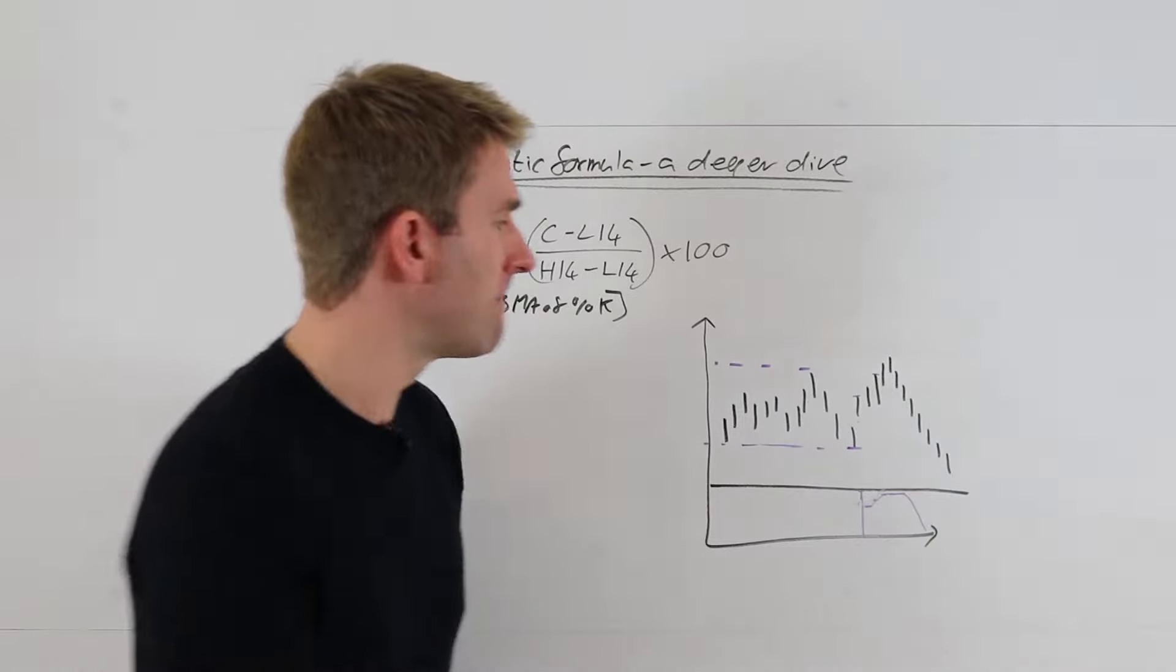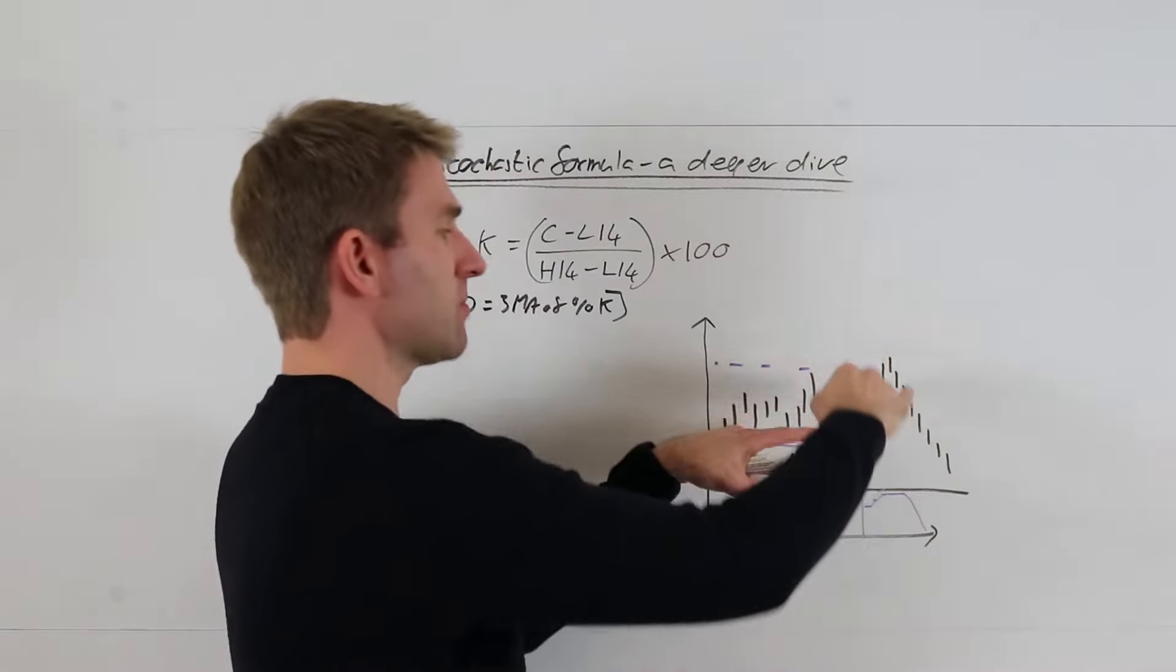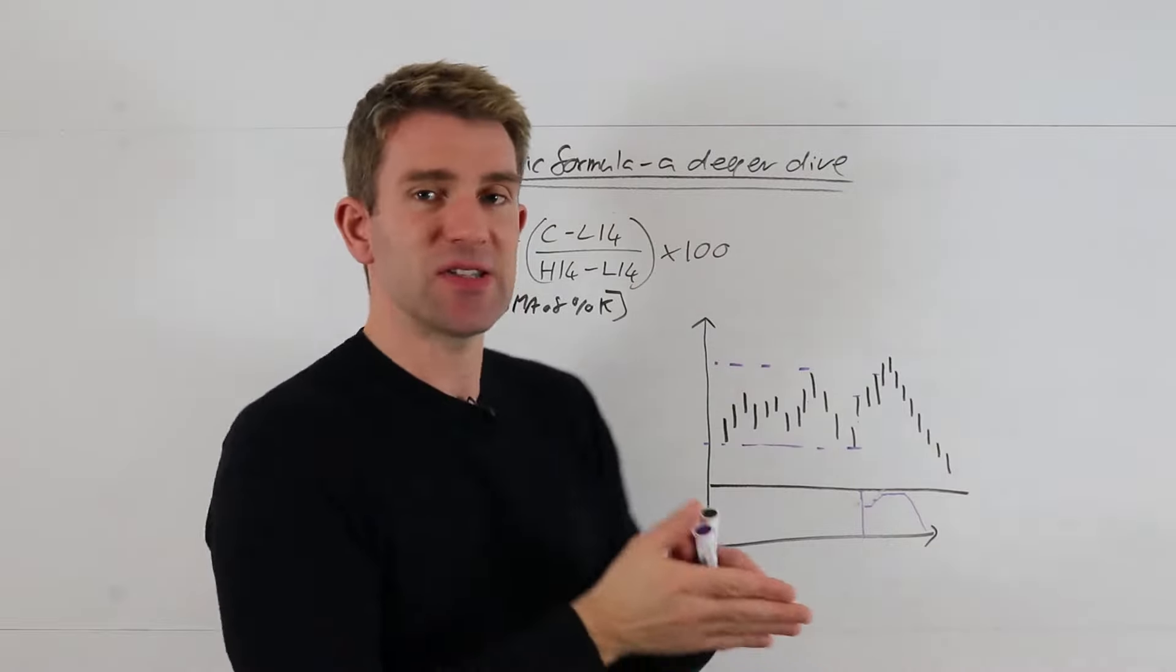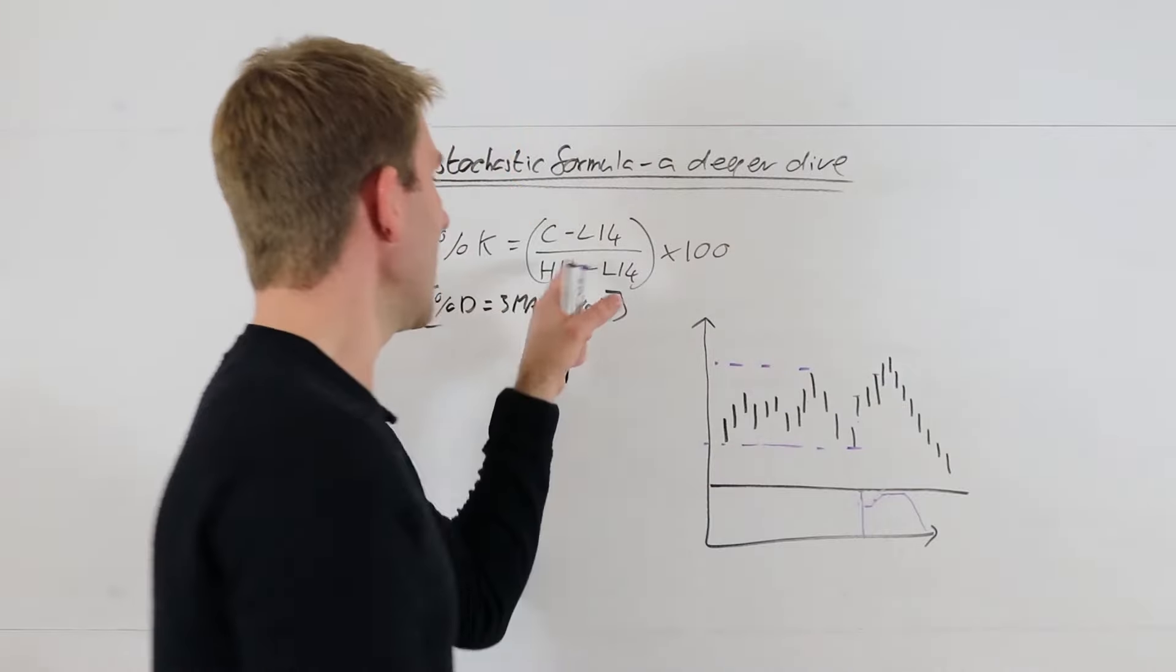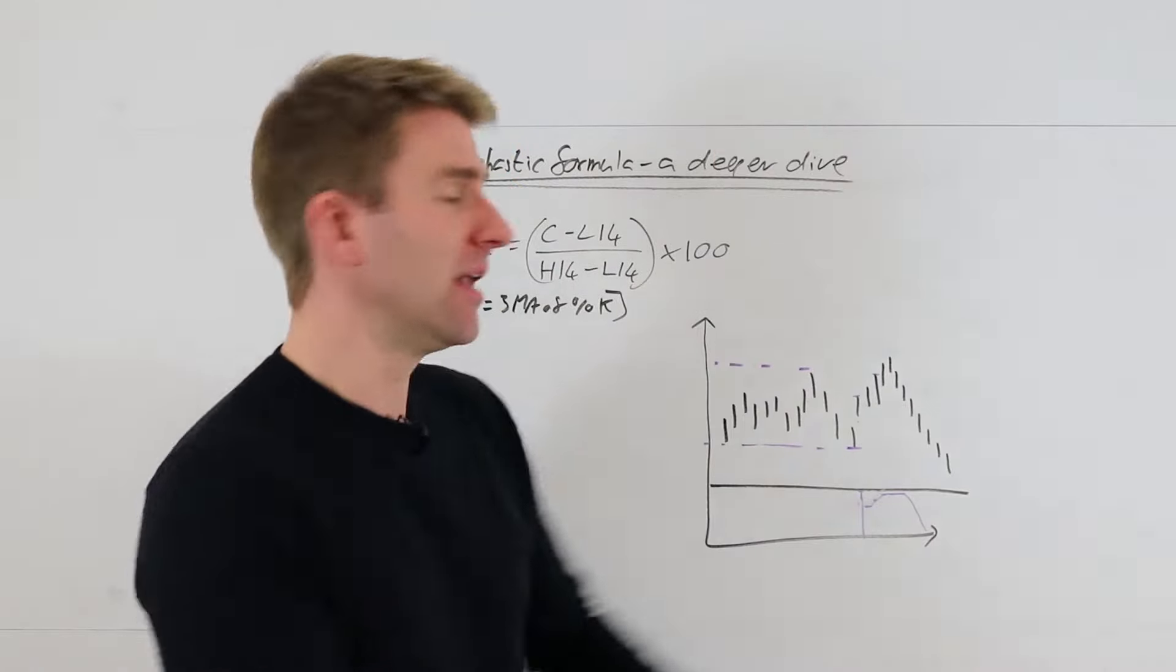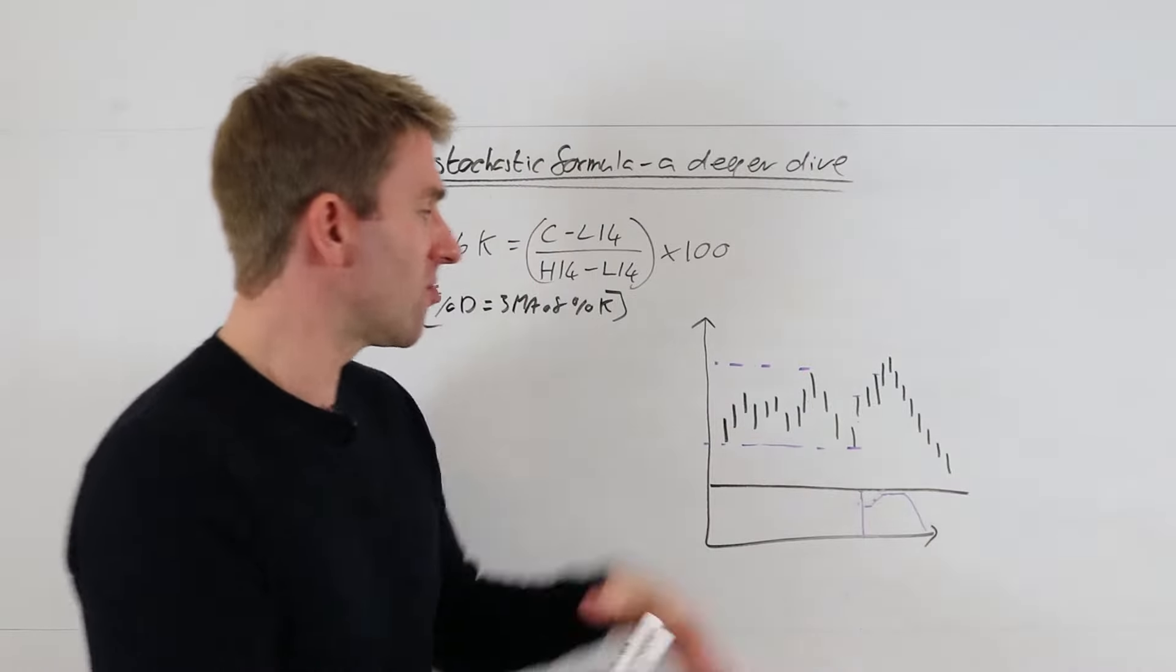As we get further along now we're spreading out the range, so the stochastic is going to be a little bit more dampened because if we had this range expanding, our high and our low is now a wider number so where we are relative to that is going to change.